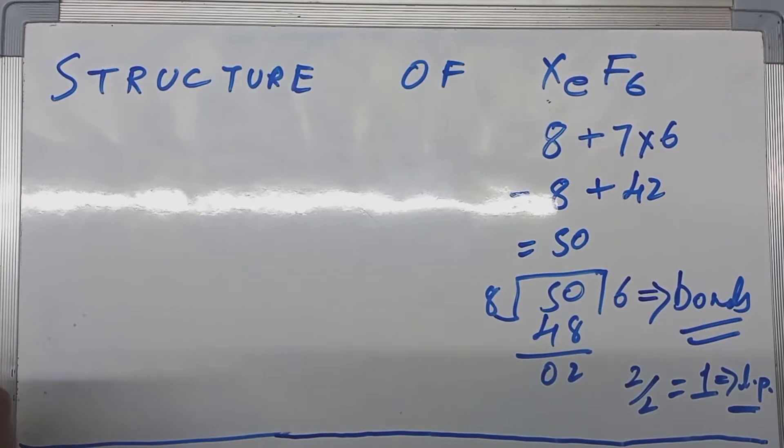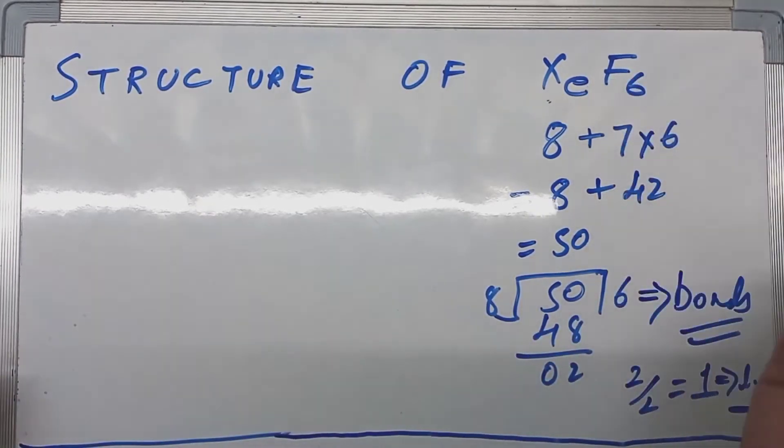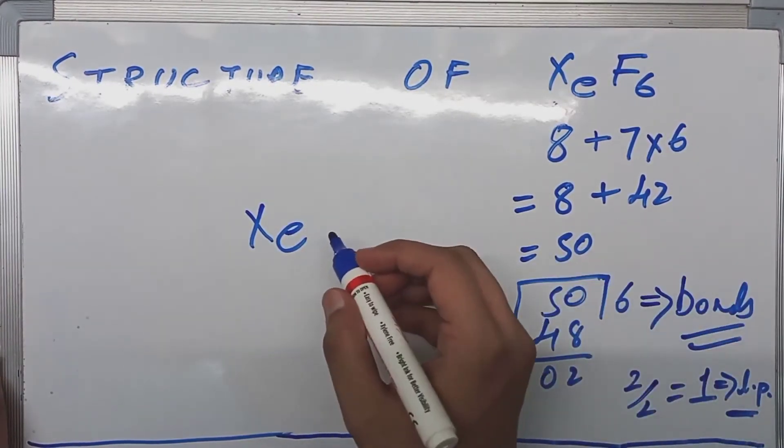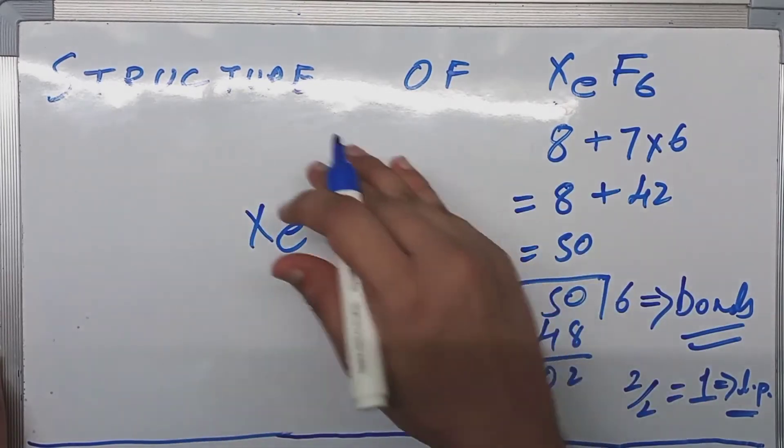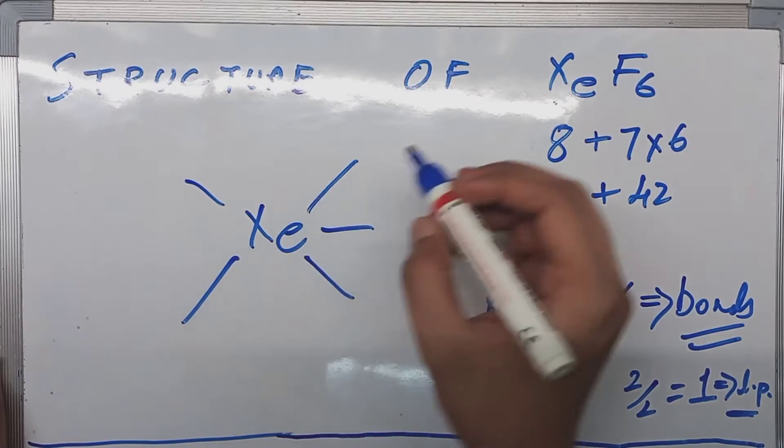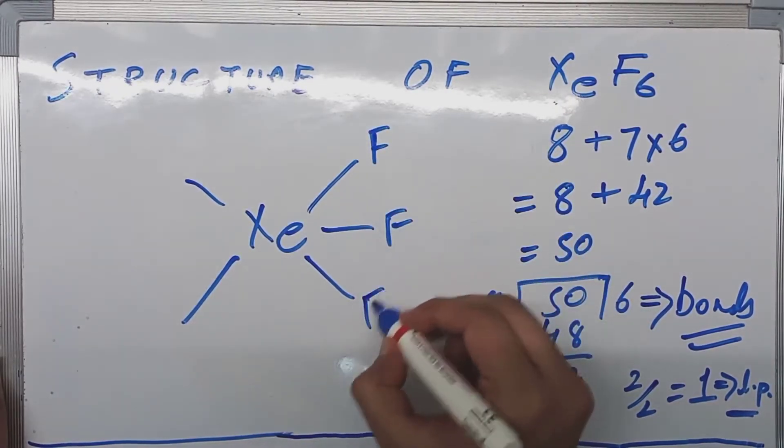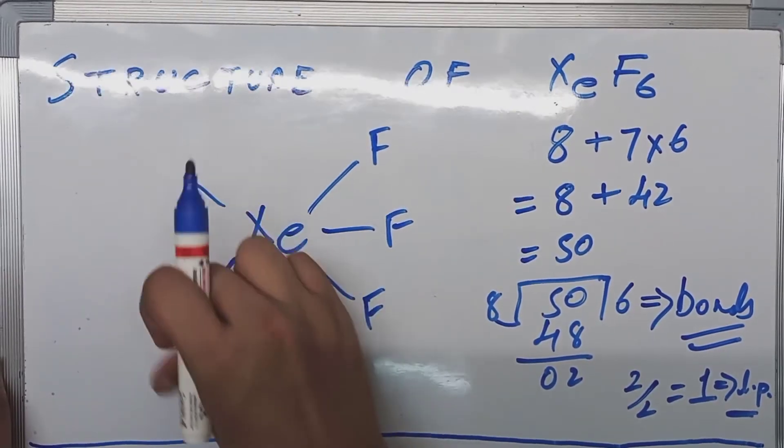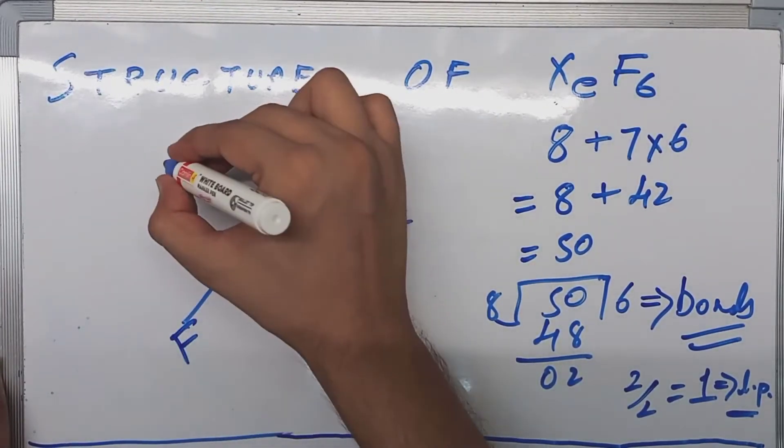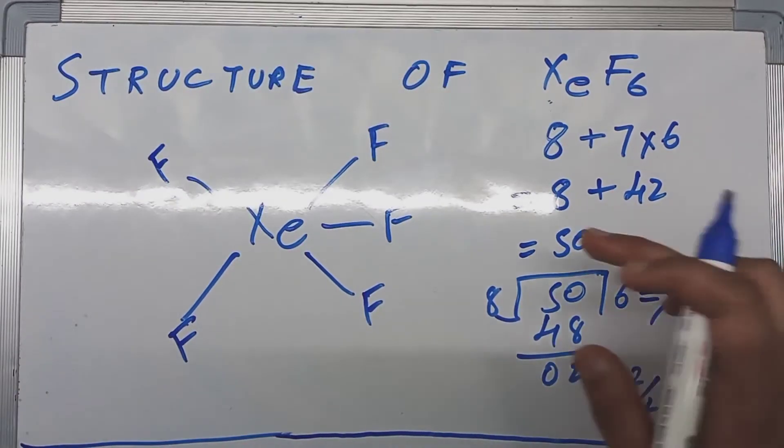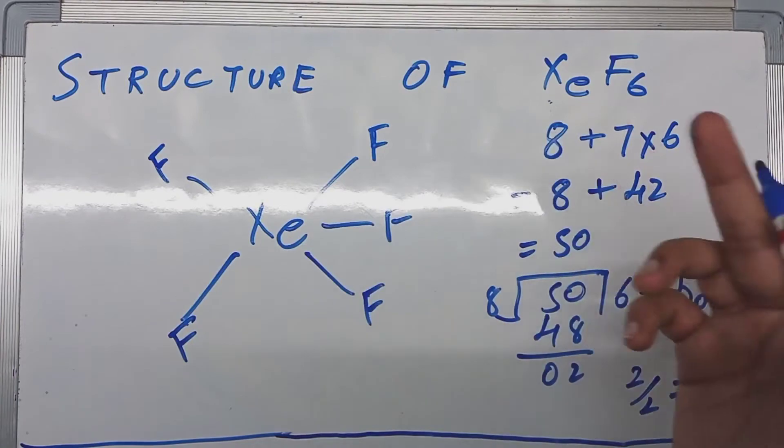6 plus 1 is 7, sp3d3 hybridization. The central molecule is xenon. We are going to write xenon here, and we are going to draw a pentagon first. 1, 2, 3, 4, 5. Fluorine, fluorine, fluorine, fluorine, and fluorine. Now we have 5 fluorine atoms.